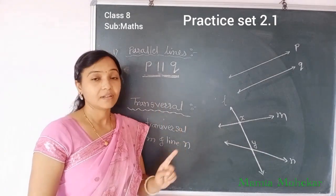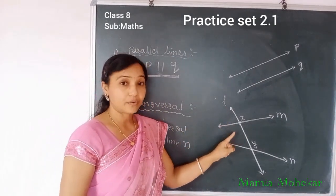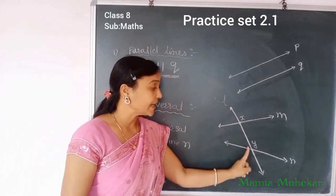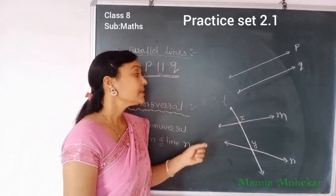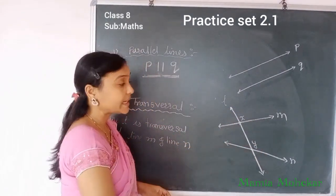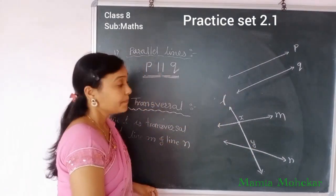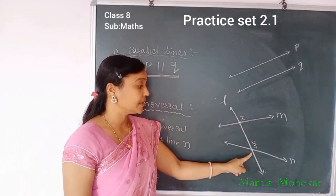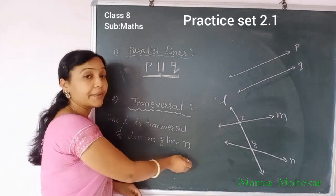Our next topic is transversal. We can define a transversal as a line which intersects two or more given lines in two or more distinct points. That line is called a transversal of those given lines. For example, line L intersects lines M and N in two distinct points X and Y. So we say line L is the transversal of lines M and N.